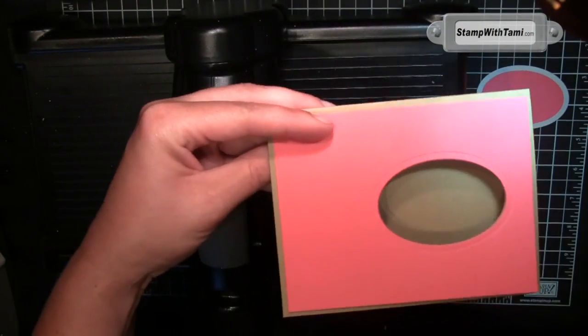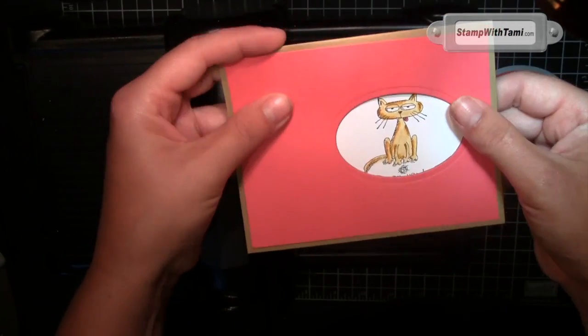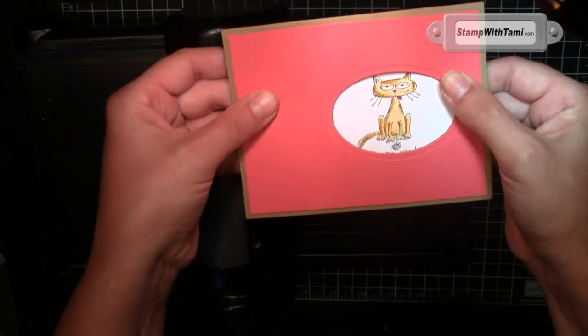Okay, so now we'll just pop that right out and we have our window right inside our card. You can even take your insert and see how well you did by just putting your little insert in there. You can even attach the insert now if you wanted to. Isn't that awesome?